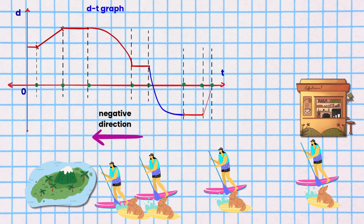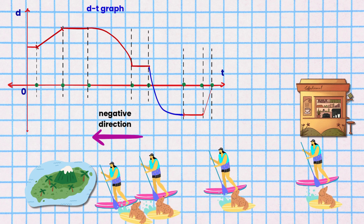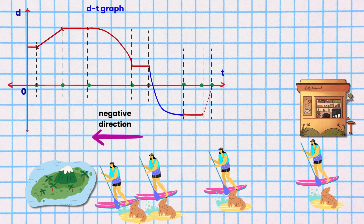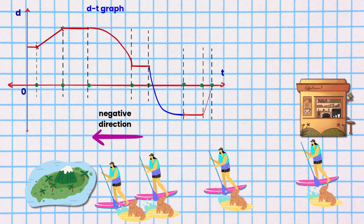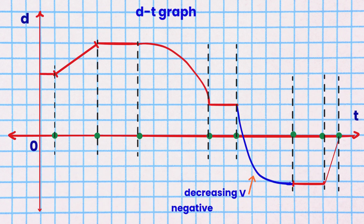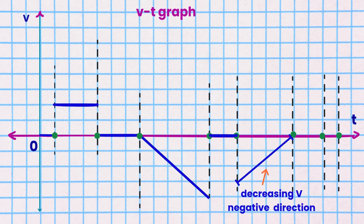Segment 6. Mole and Electron continue their journey in the same reverse direction toward Island B, slowing down as they travel. They paddle board in the negative direction to Island B at a decreasing velocity. This is shown as a straight line with a positive slope in the VT graph below the time axis.